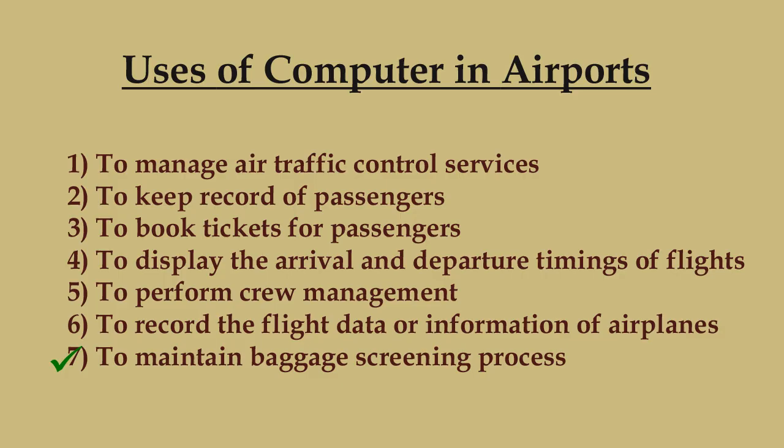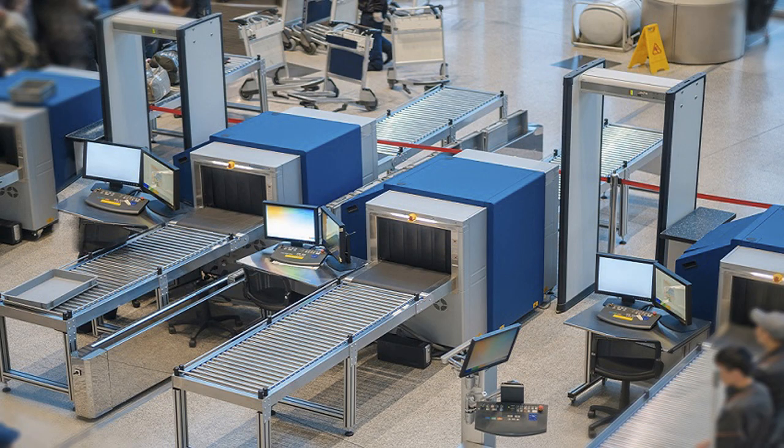Number seven, to maintain baggage screening process — special computers are used to scan and display the baggage of passengers before getting into the airplane. This is done to detect dangerous goods or explosive materials in the baggage of passengers to prevent unwanted incidents.